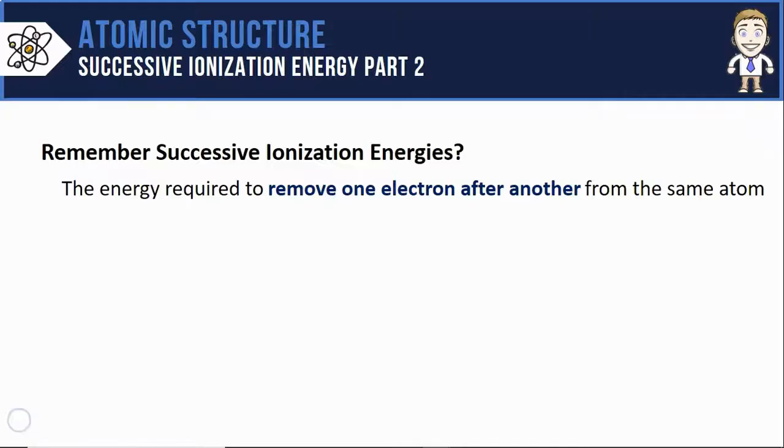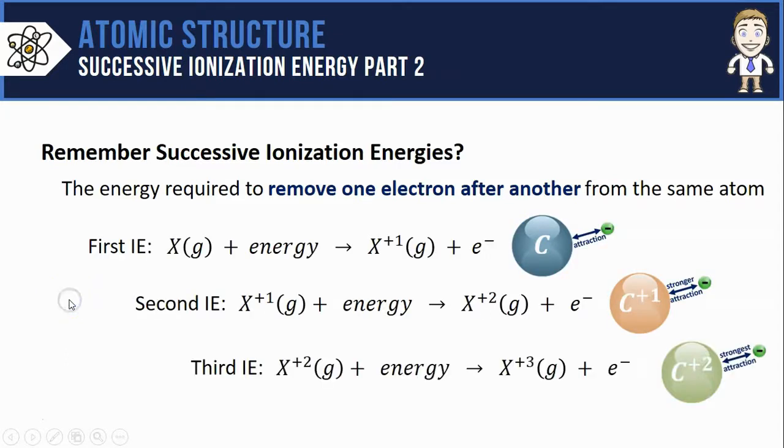First, remember that successive ionization energies are the energies required to remove one electron after another from the same atom. Like we're showing here with these three subsequent equations, the first electron is the easiest to remove, so our first ionization energies will have the lowest values.